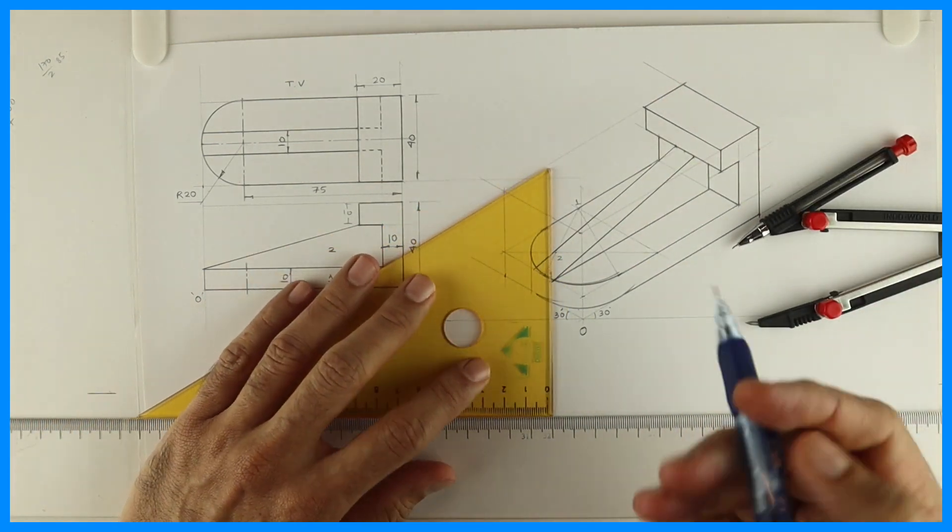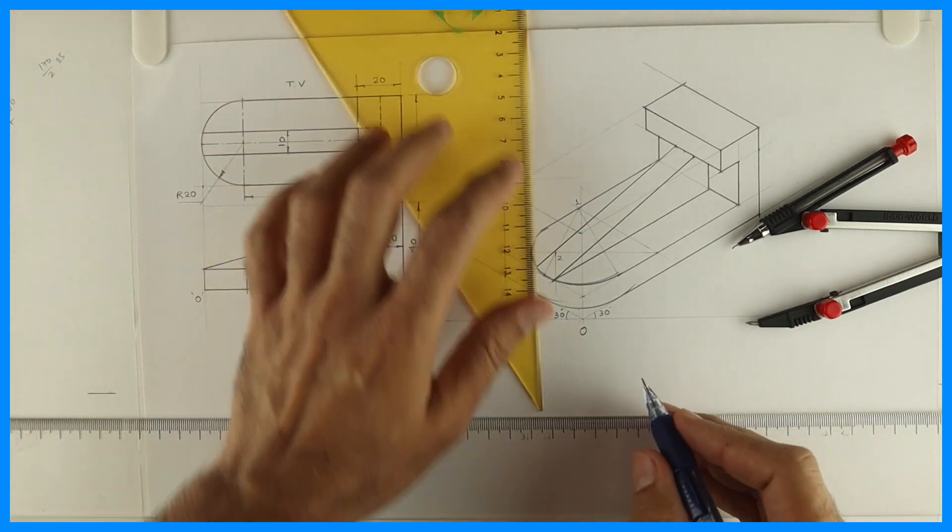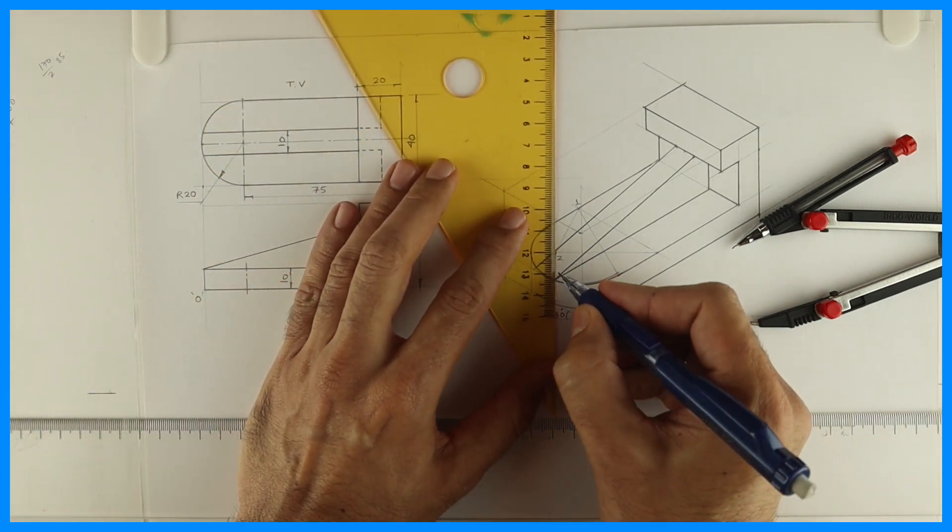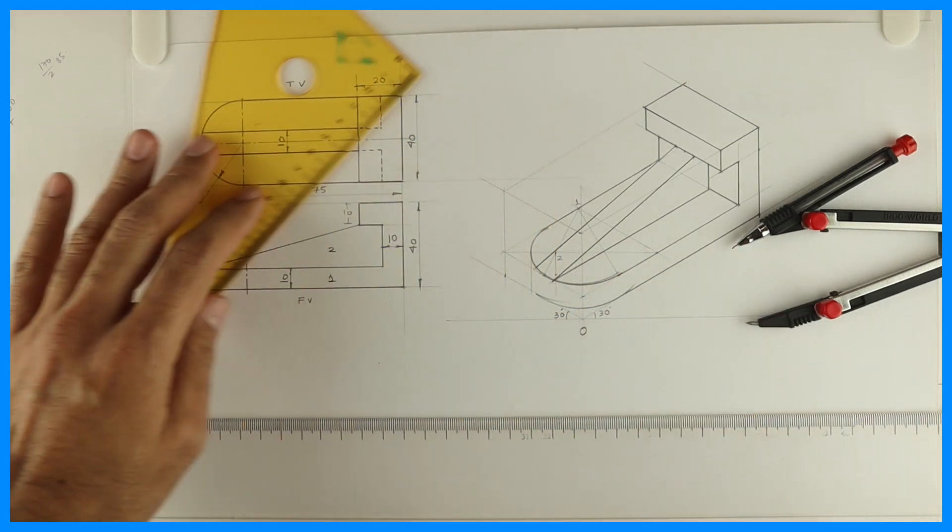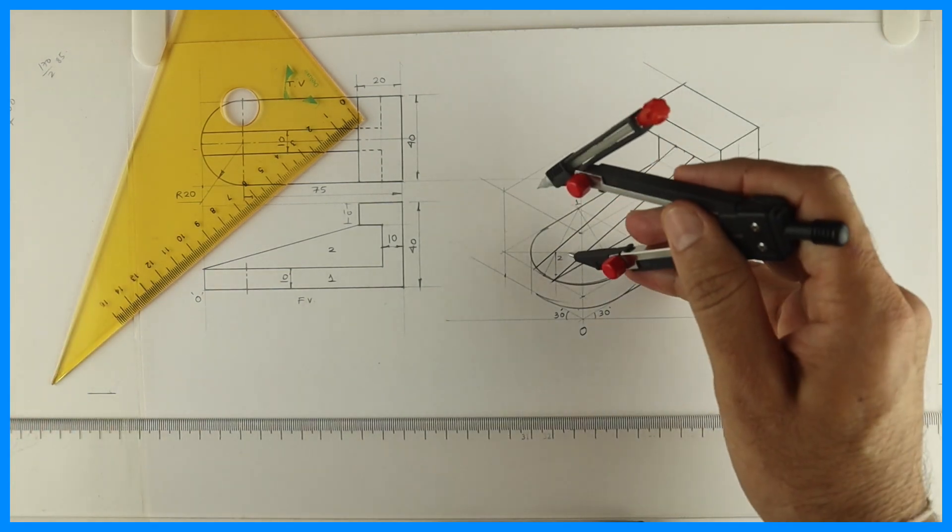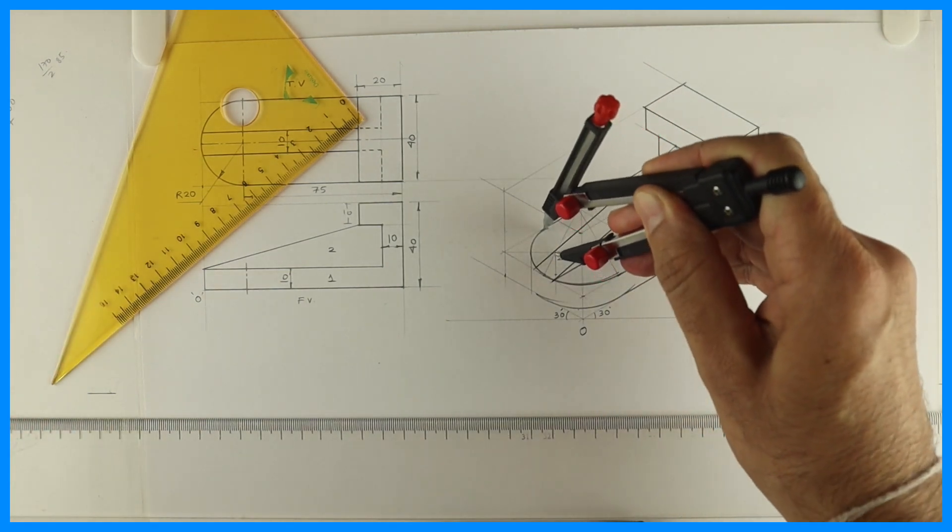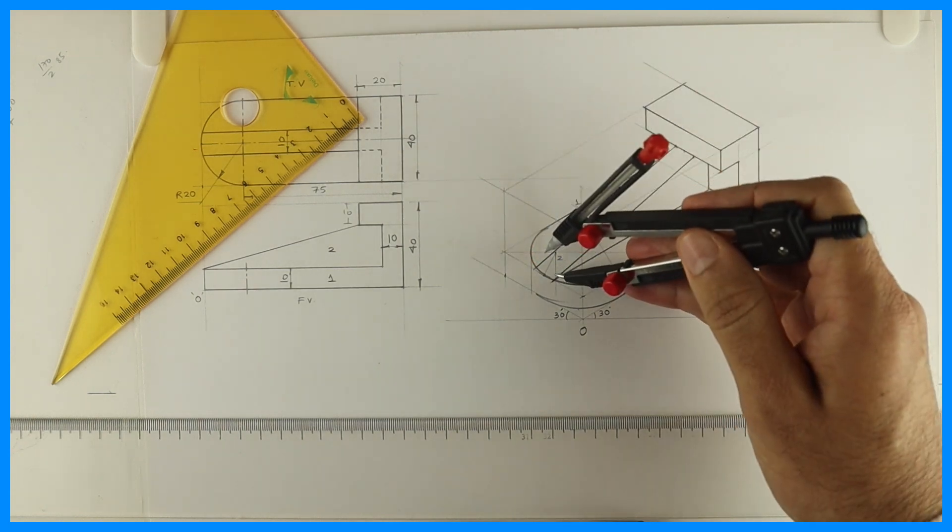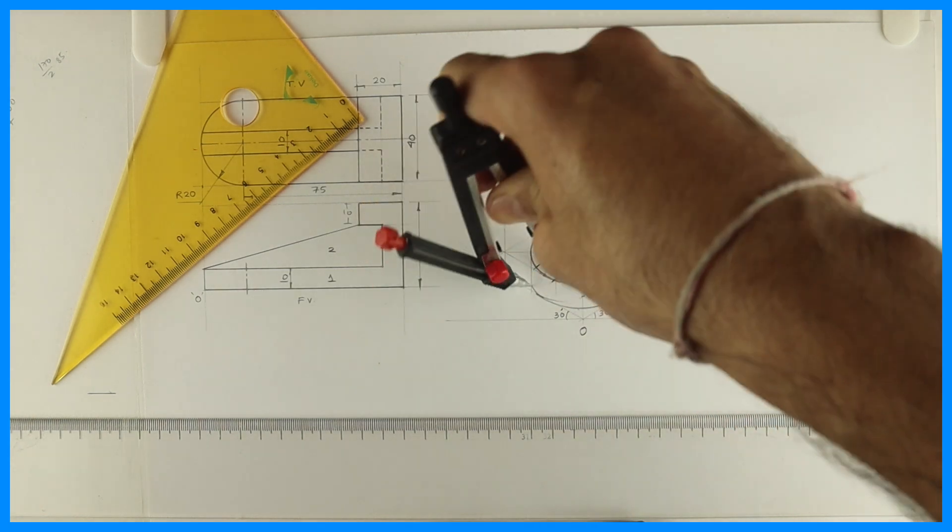Same way we will take this radius. From point 2, we will go down by 10 and draw the arc again.